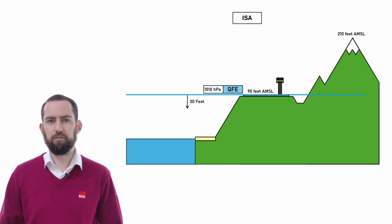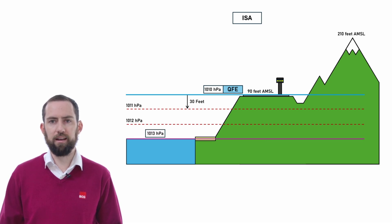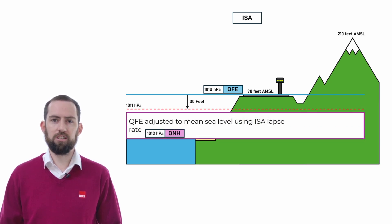If we went down 30 feet, we would find the 1011 level, then the 1012 level, and finally the 1013 level at sea level. This would bring us to our second definition, QNH. QNH is the QFE mathematically adjusted down to sea level using the ISA lapse rate. I'll fill in the rest of the atmosphere for good measure.